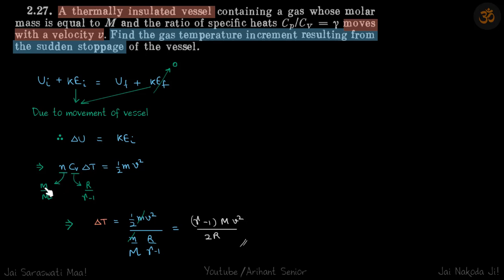N is mass upon molecular mass. Cv is R by gamma minus 1. Solving that we get delta T is equal to this.